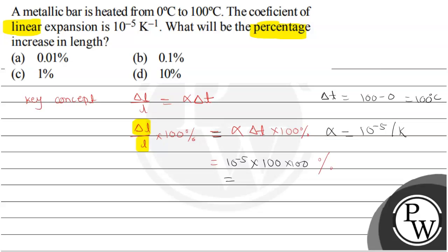Now this is in the percent form which is equal to 10 raised to minus 5 into 10 raised to how much? 10 raised to 4, which is equal to 10 raised to minus 1%. That means the answer is 0.1%. So percent increase in the length is 0.1%.